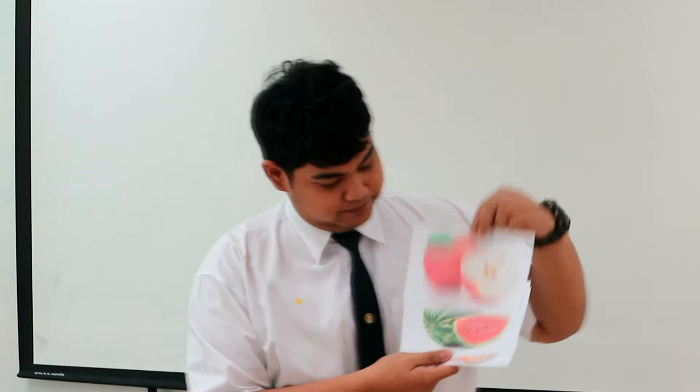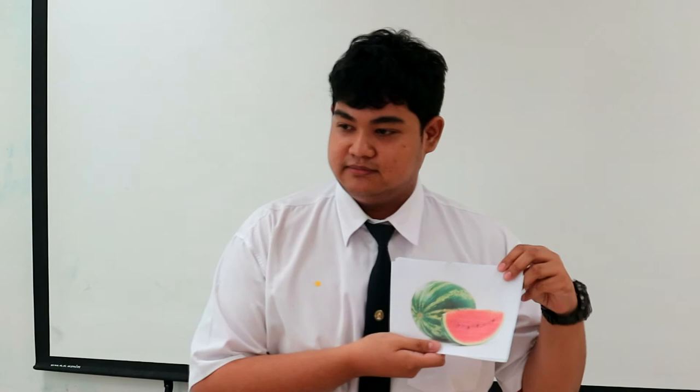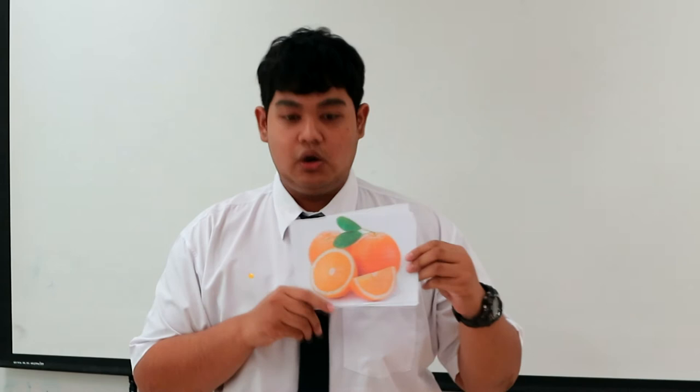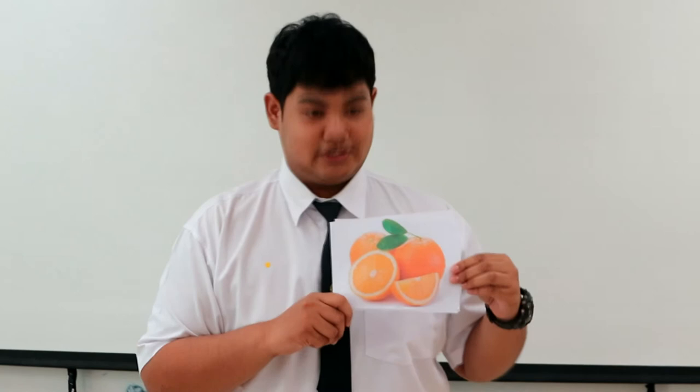The next one is watermelon. Repeat: watermelon. With an American accent you can pronounce this word like watermelon. I like to eat watermelons. And the next one — do you know what this is? Orange! Yes, absolutely. This is an orange. Repeat: orange. I like to eat orange.